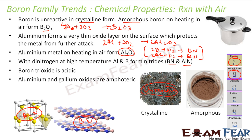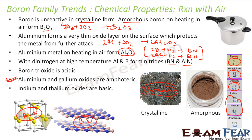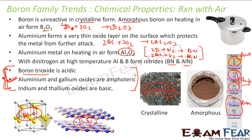Aluminium and gallium are amphoteric — they react with both acid and base. The oxides of indium and thallium are basic in nature, while aluminium and gallium oxides are amphoteric, and boron oxide is acidic. As we go down the group, the oxides become more basic. We will discuss this further in the next slides, covering the increasing basic nature of oxides.